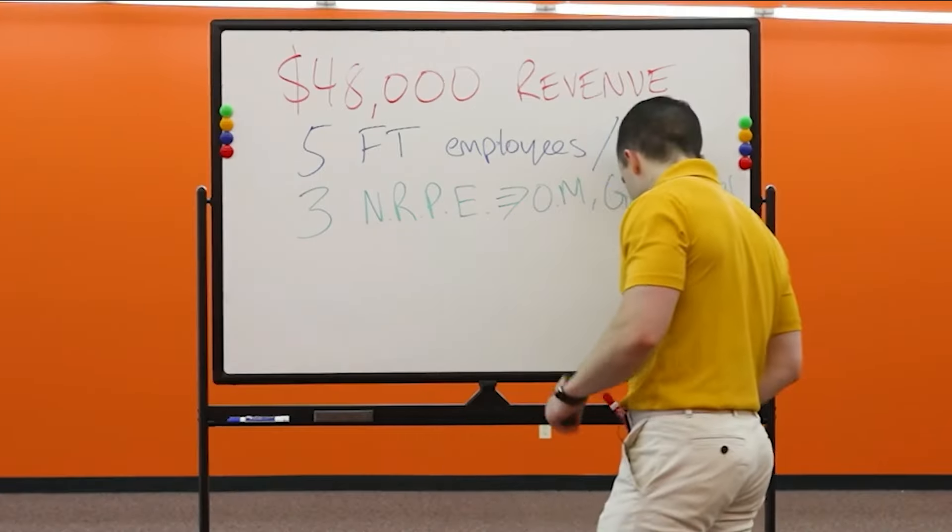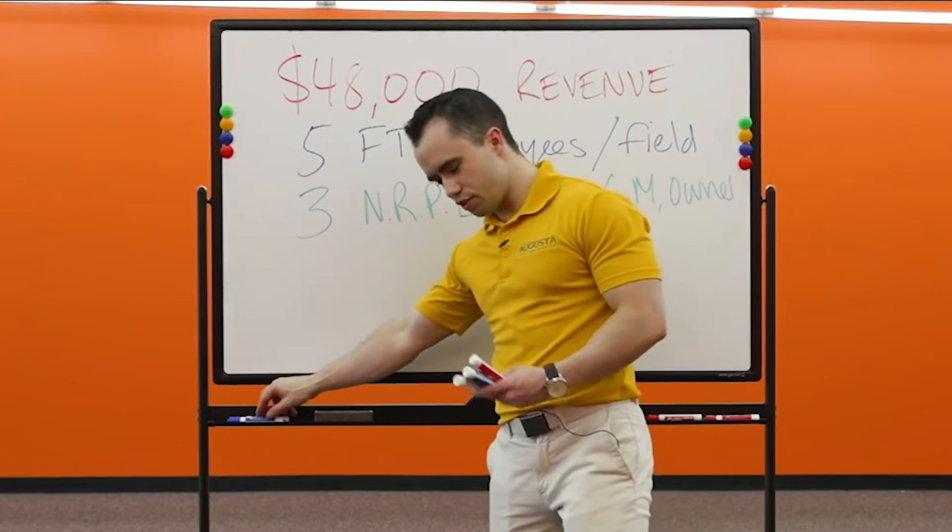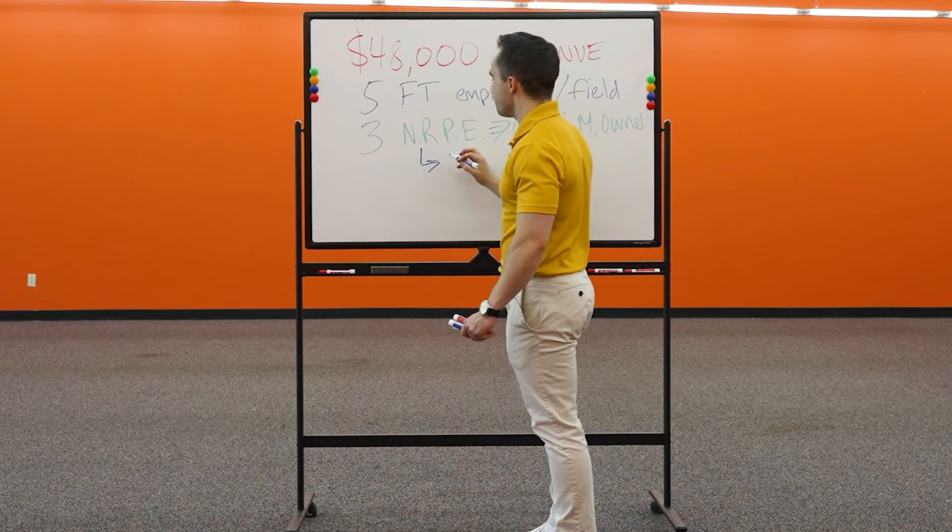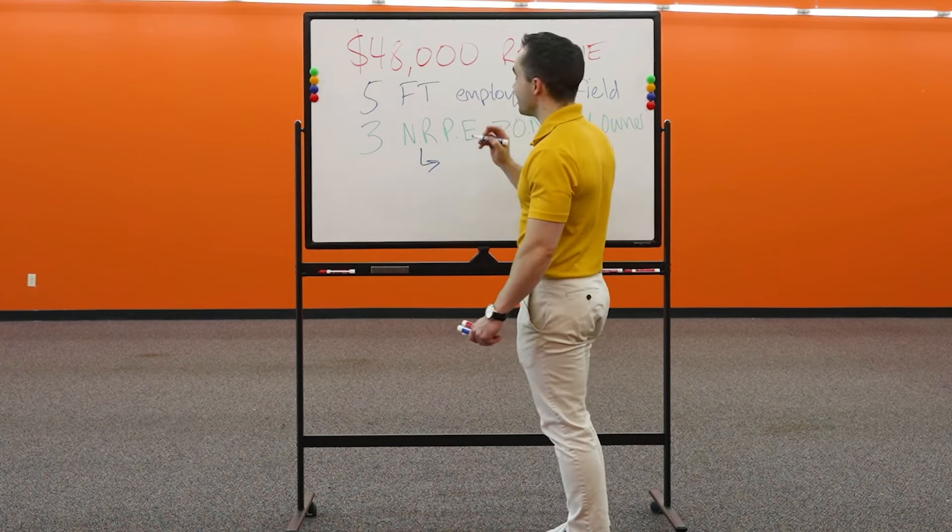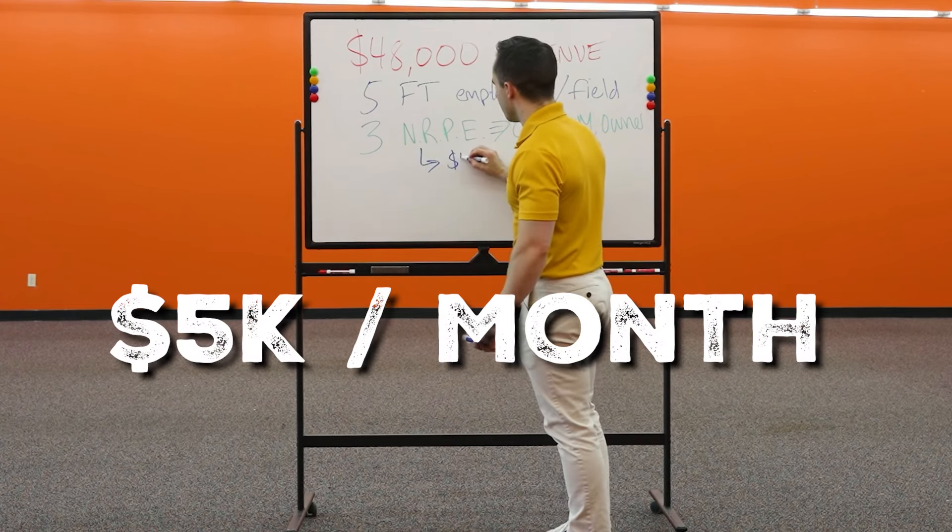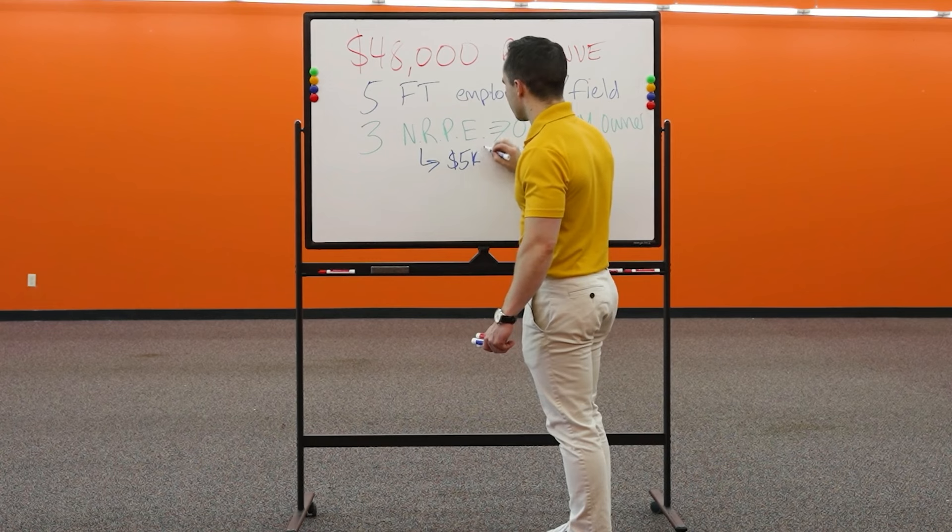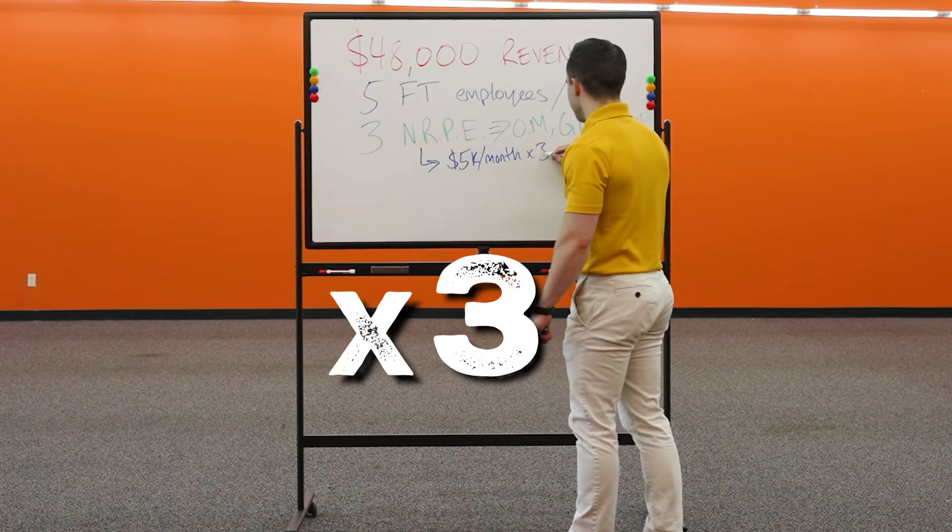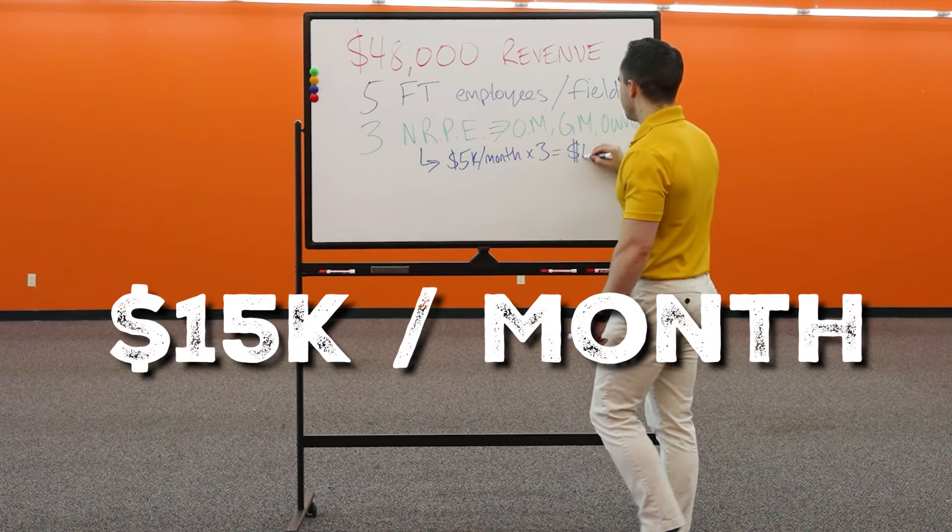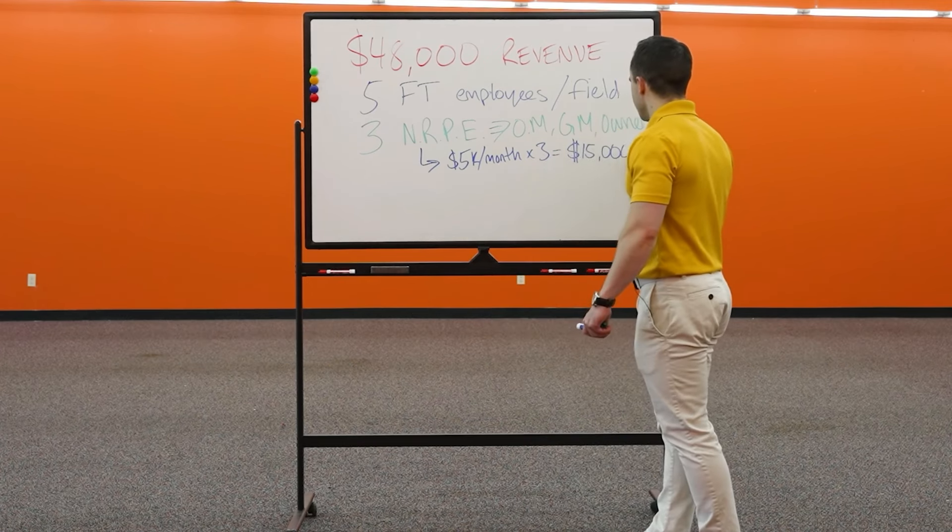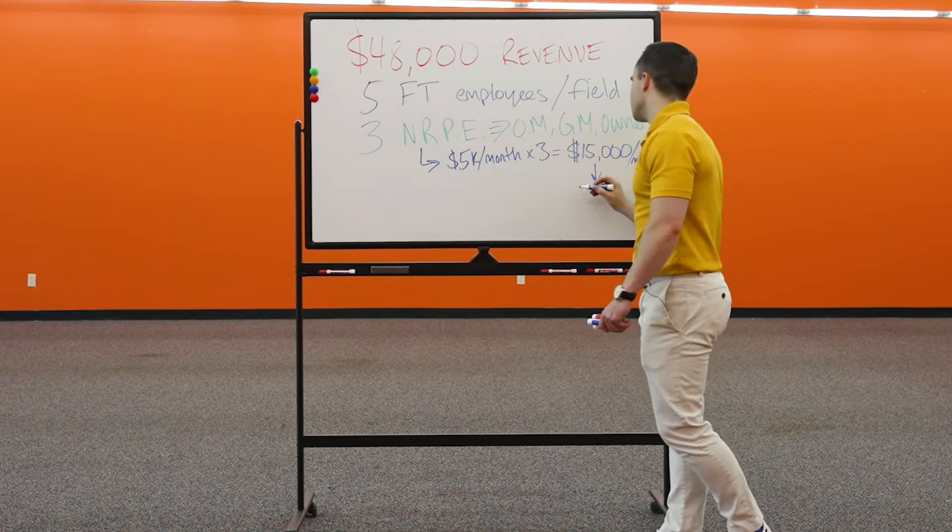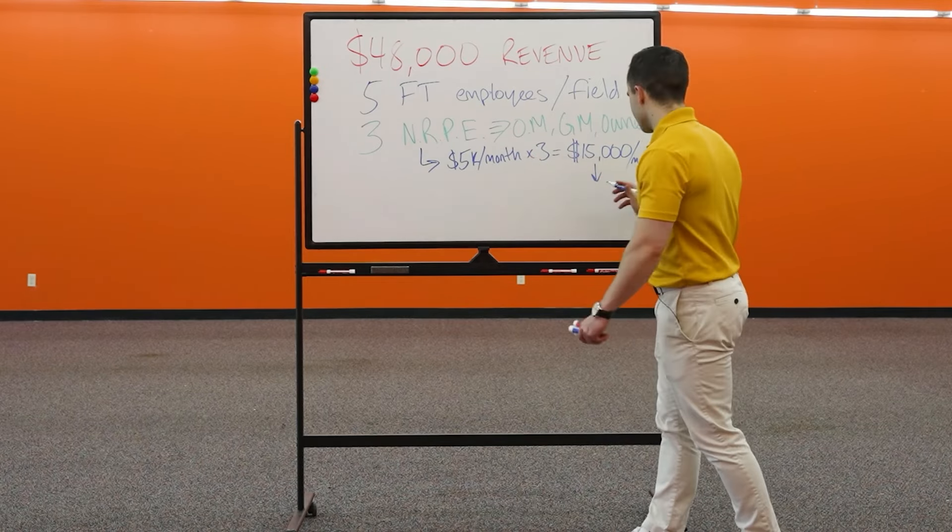These three NRPEs, also known as non-revenue producing employees, they cost the business about $5,000 per person in salary every single month. Not their wages, but actual salary, which means they were year-round. So $5,000 per month, we have to multiply that by three and we get approximately $15,000 in just wages per month for non-revenue producing employees.